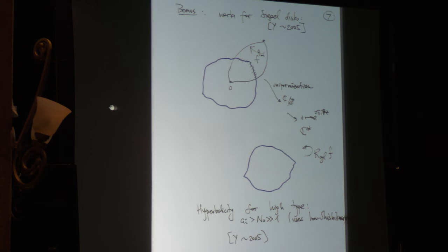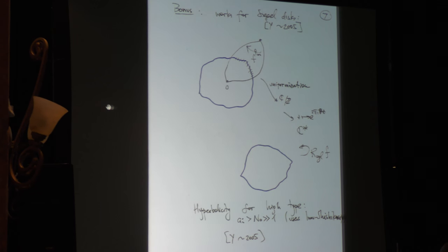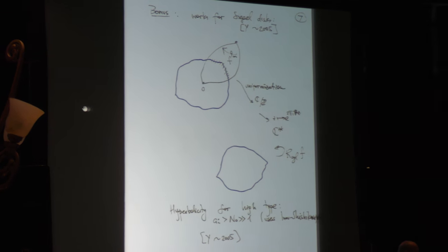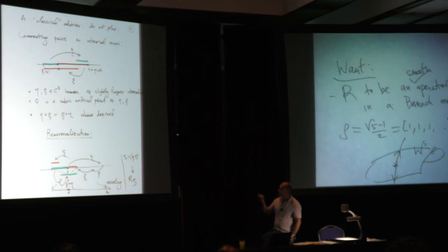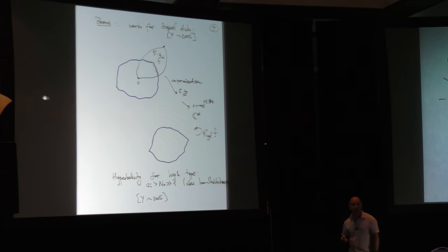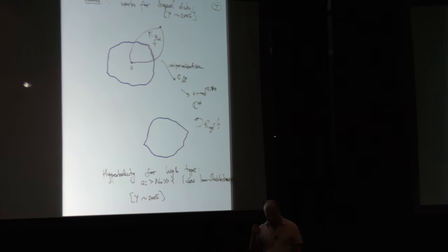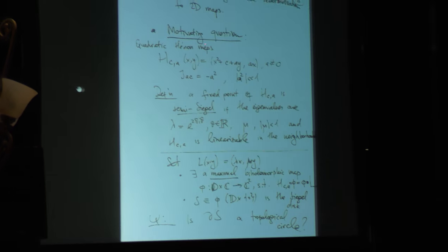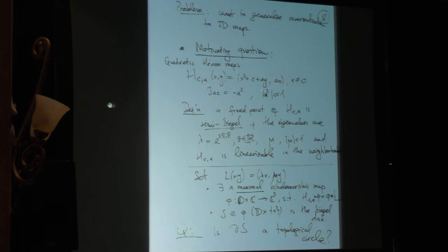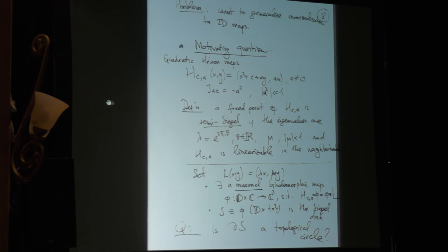For Siegel disks the only difference is you lose the real symmetry — one of the fixed points is the center of the Siegel disk and the other is outside — and you still do the same construction, uniformizing to C* so you put one end of the cylinder at the origin. For high type, using known results one can show hyperbolicity, and for other types there was a partial result that Misha already described. For the rest of the talk I have to regress, because the questions I would like to apply renormalization to — both in this circle maps setting and in the Siegel disk setting — are questions not in one dimension but in two dimensions.